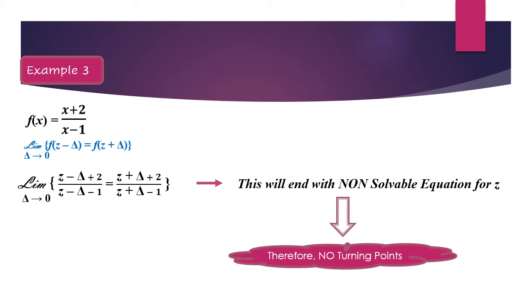Another example, this example here, I just introduced it on purpose, because it doesn't have neither minimum nor maximum, or not even turning point. This is x plus 2 divided by x minus 1. This is my grand equation here. If I'm using the same concept, z minus delta equals to the function as z plus delta, or vice versa.